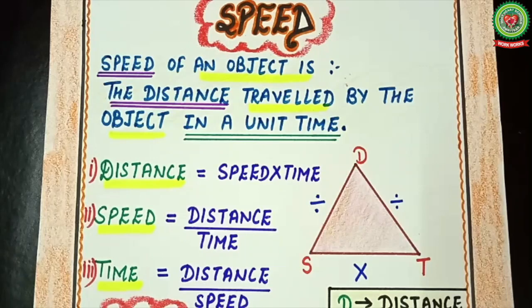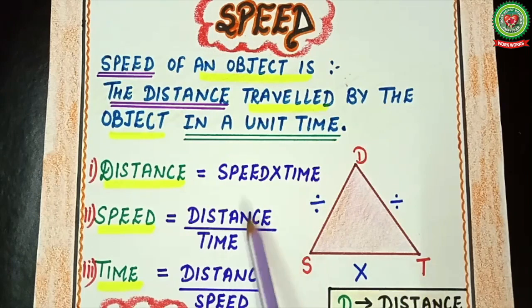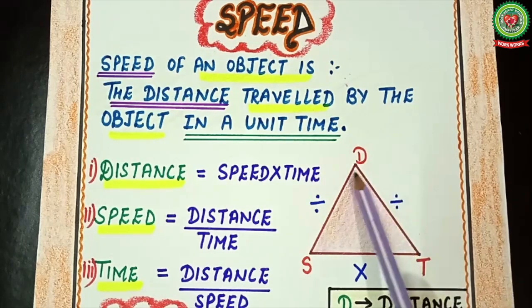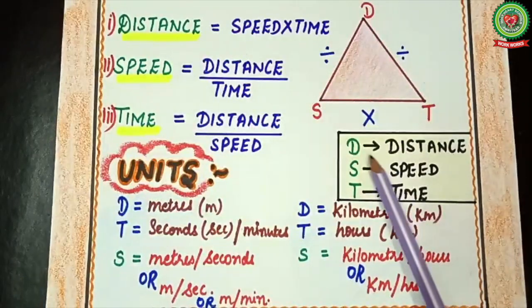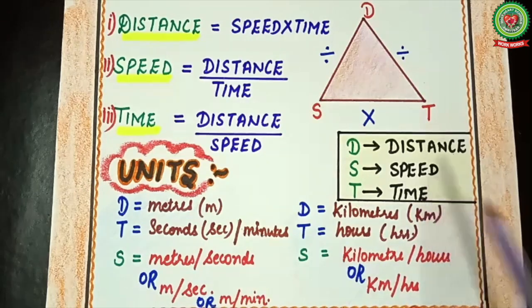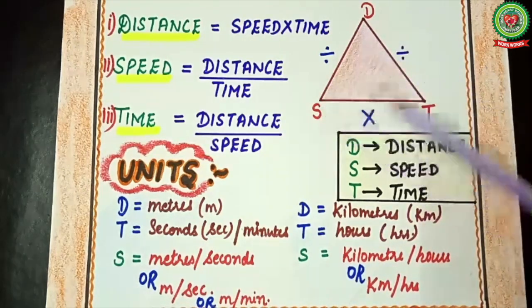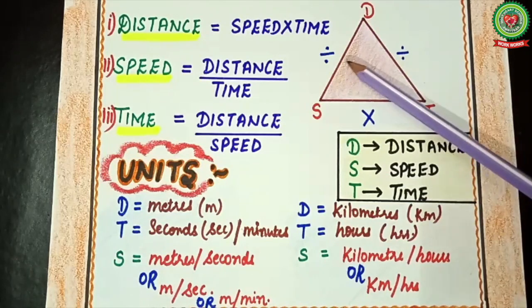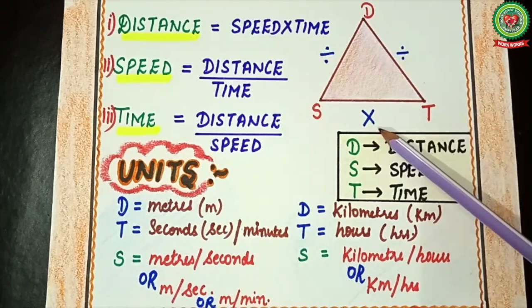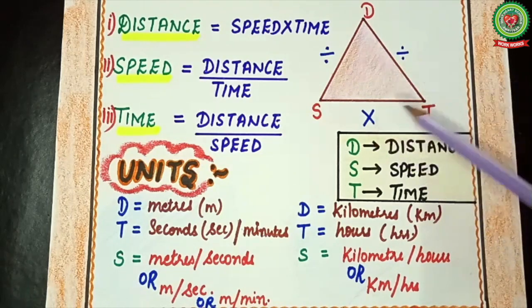Here we can represent the relationship between distance, speed and time using a triangle, and then we can form the formulas for speed, distance and time. I have made a triangle with D at the top, S and T at the bottom. The sign between D and ST is division, and S and T are connected by multiplication.